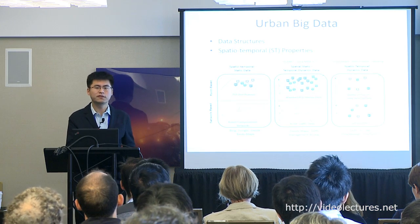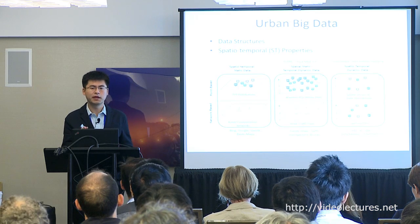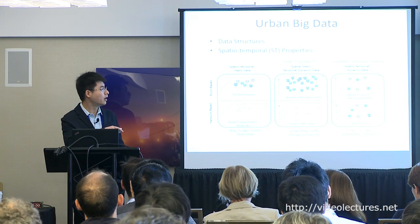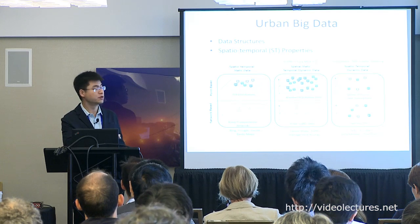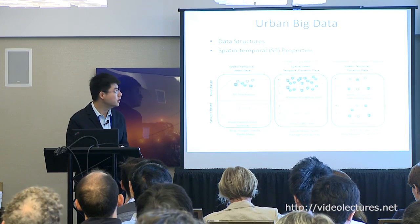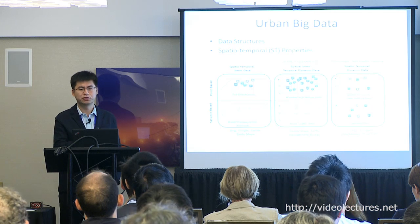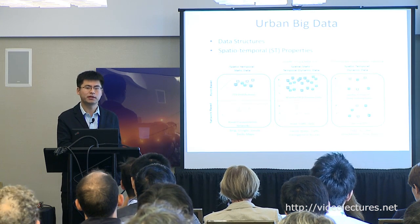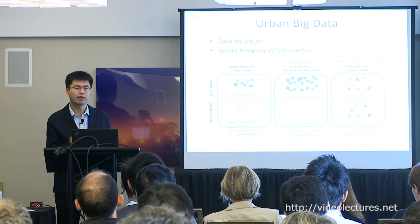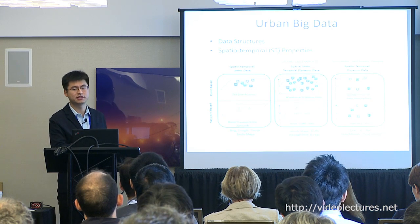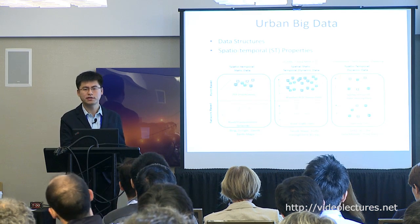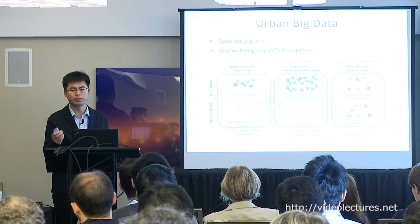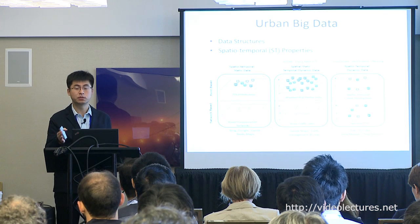In terms of spatial and temporal properties, we can divide data into three categories. One type is called spatial-temporal static data: both its spatial and temporal properties do not change over time. For example, point-of-interest data is static. Once a point of interest has been built in the city — such as a restaurant or shopping mall — its location does not change.